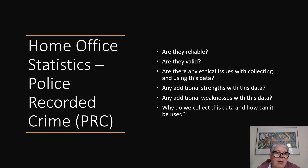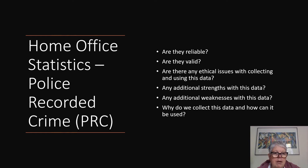The first set of statistics are the official statistics called the police recorded crime. A crime is committed, someone has to notice it and feel it's serious enough to go to the police. If the police also take it seriously, it will be recorded — not just reported, but recorded.